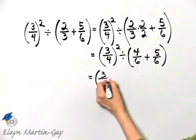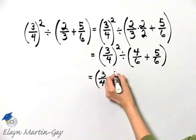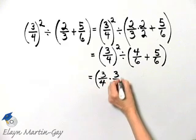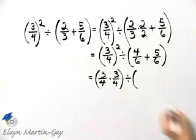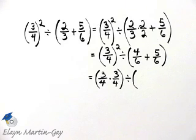Three-fourths squared. That is three-fourths times three-fourths. So keep that in mind. Divided by, now what is four-sixths plus five-sixths?